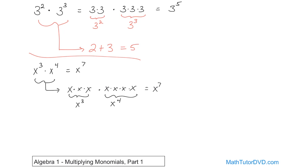It's very important, though, that in order to add these exponents together, the base — the thing that's being raised to the exponent — has to match exactly. The variable has to be the same in order for you to add these exponents. Basically, you can consider the bases have to be equivalent in order to do that.